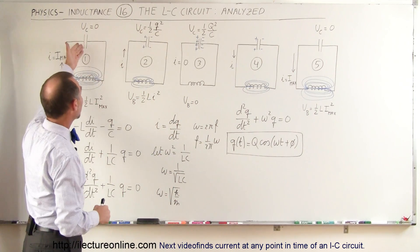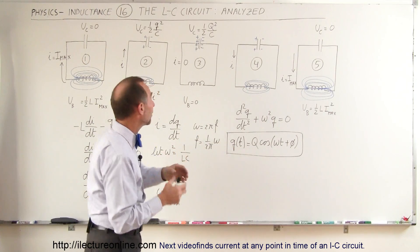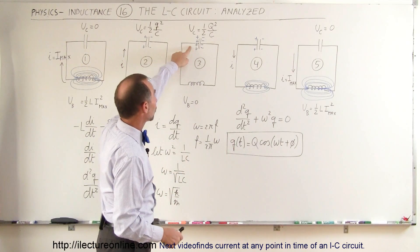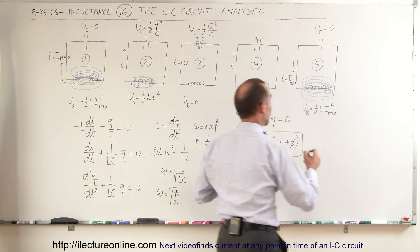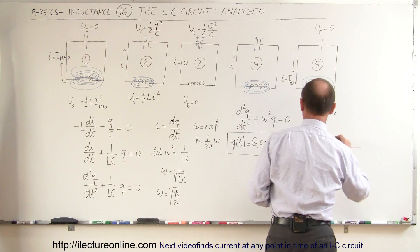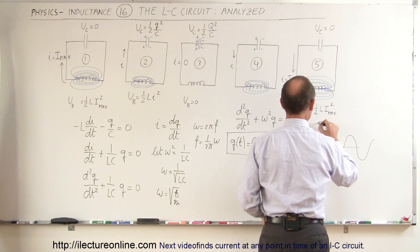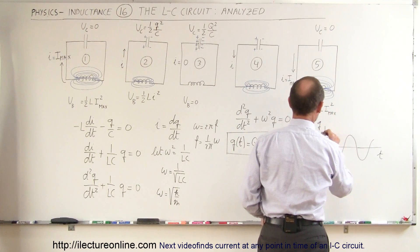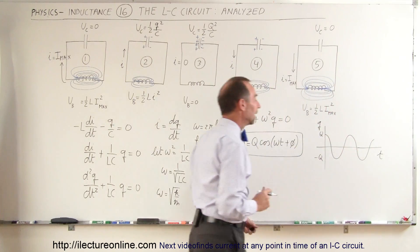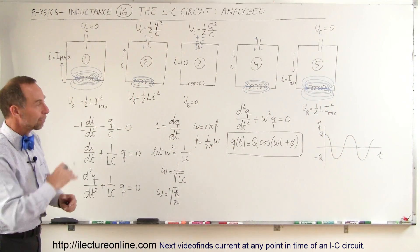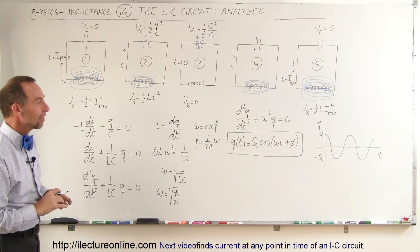For example, the charge on the capacitor as a function of time is the total maximum charge on the capacitor times the cosine of ωt plus φ. This means the charge on the capacitor will vary sinusoidally over time — plotting q versus time on the horizontal axis, it oscillates between maximum q and minus q. That equation describes the relationship between the charge on the capacitor and elapsed time.